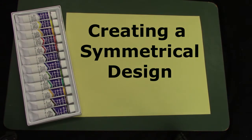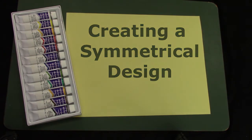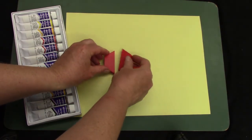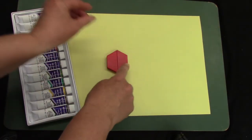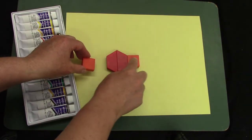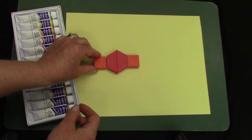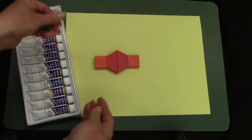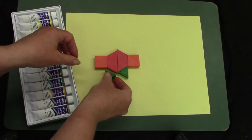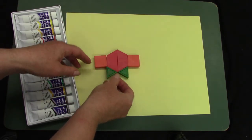We're going to be creating a symmetrical design. If you were to do a symmetrical design with shapes, whatever you did on one side you would do on the other side. So if I put a square on this side, I would need to put a square on that side. And if I put a triangle on this side, I would need to put a triangle on this side.